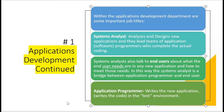The systems analyst talks to end users about what their needs are for any new application and how to meet those needs. In this way, the systems analyst is a bridge between the application programmer who writes the code and the end user. The systems analyst is something of a people person, whereas the application programmers don't have to be — all they do is write the code. The systems analyst will discuss expectations for the new system with end users up front.